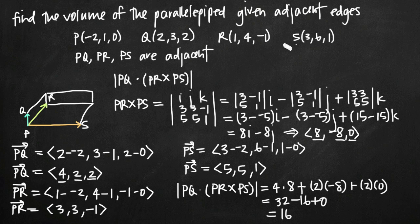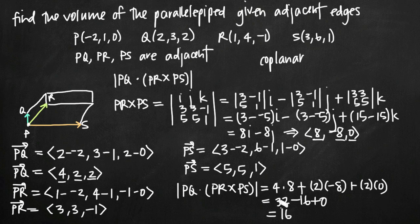And 16 is the volume of the parallelepiped defined by these four points P, Q, R, and S, when PQ, PR, and PS are three adjacent edges — three edges that touch at a corner of our three-dimensional parallelepiped figure. One thing to remember: if you get a result of zero from the scalar triple product, the volume equals zero, which means we don't have a three-dimensional figure. That means the point R is actually in the same plane as P, Q, and S, so all four points are coplanar.